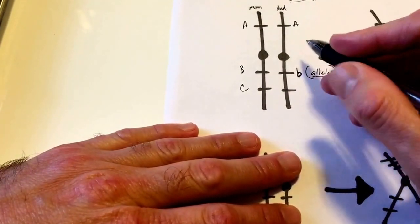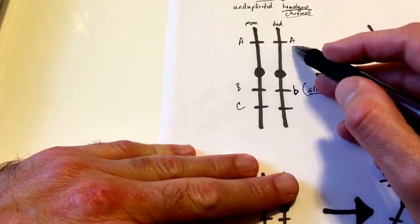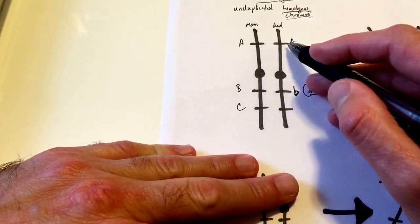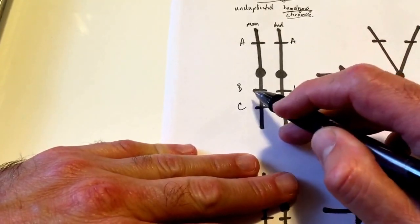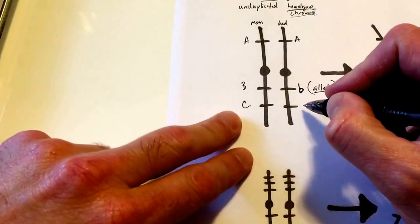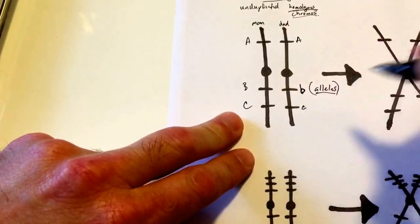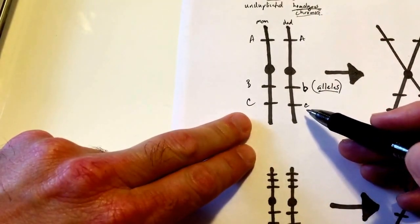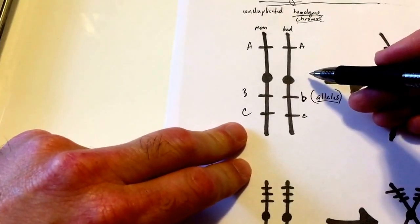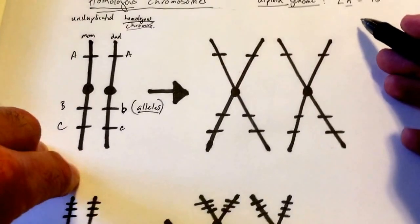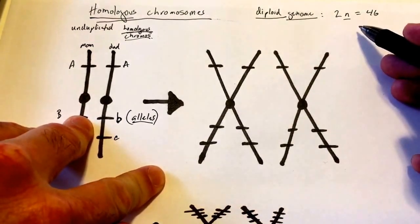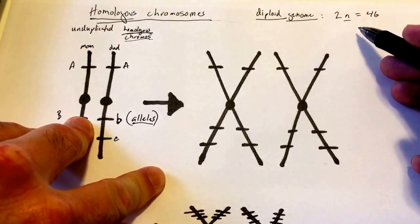We may inherit the exact same versions of the A gene from mom as we do from dad, but different versions of the B gene. And just for the sake of example, let's say we inherit a different version of the C gene from dad. That is what we mean by homologous chromosomes, and as we've said, we inherit 23 pairs of homologous chromosomes from mom and from dad.